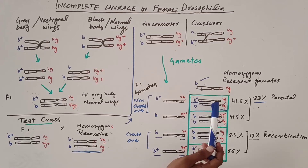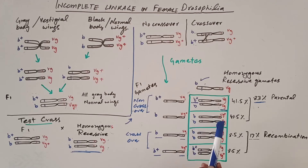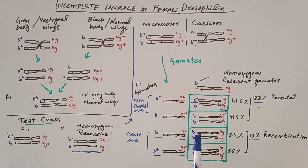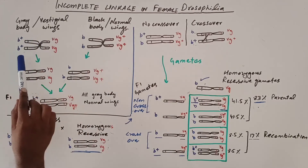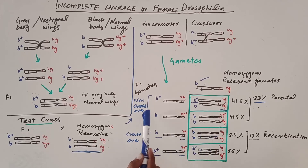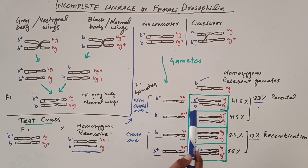This is incomplete linkage in female Drosophila. Normally there is no separation between the linked genes — gray body/vestigial wing and black body/normal wing — giving parental results. But when crossing over occurs, there is separation between the two genes, producing black body with vestigial wing and gray body with normal wing as recombinants.